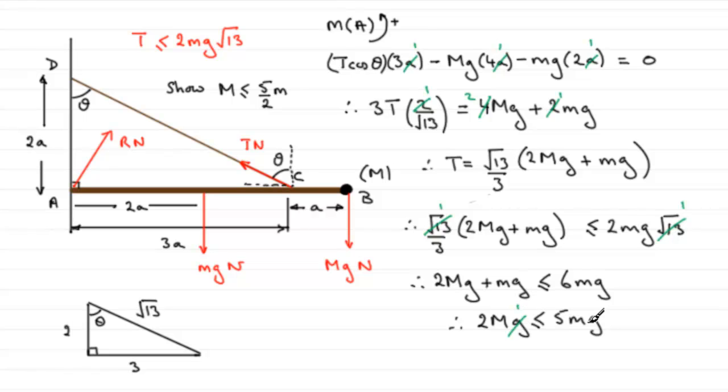I suppose you could leave it to the very end, but might as well do that at these stages, I think. But we're there now, because if we divide both sides by 2, you end up with Mg being less than or equal to 5/2mg, the result we had to show.